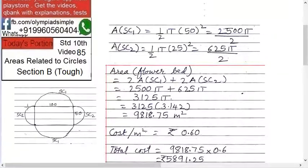Now what is r? See, this diameter is 100, so r is half, 50. So SC1 is 50 squared, 2500 π upon 2. Area of SC2 is 1 upon 2 into π times 25 squared, so 625 π upon 2.